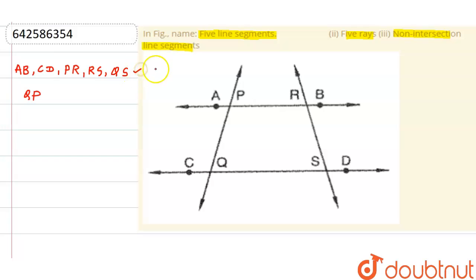So this is our answer. And the second question is, what are five rays? Now a ray is what starts at only a point and never ends.